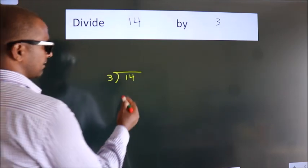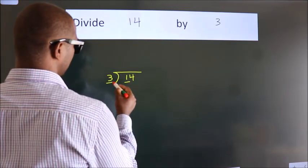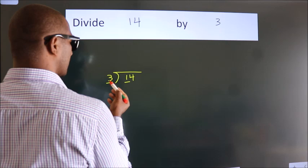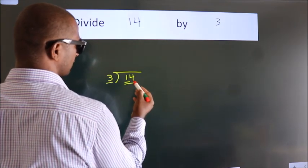Next. Here we have 1, here 3. 1 is smaller than 3, so we should take 2 numbers: 14.